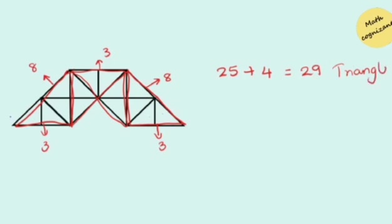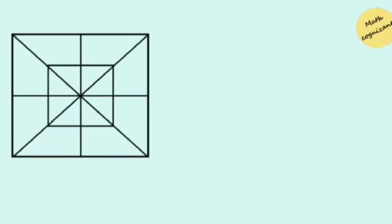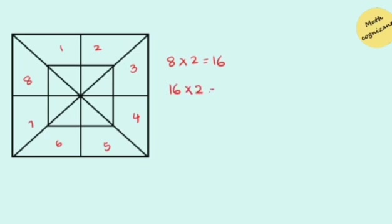For the next shape, let's count triangles in a bigger square: 1, 2, 3, 4, 5, 6, 7, 8 — with 8 triangles we multiply by 2 for a total of 16 triangles in the bigger square. Similarly, in the smaller inner square there are also 8 triangles, giving another 16. So altogether 16 plus 16 equals 32 triangles formed by the two squares inscribed within each other.